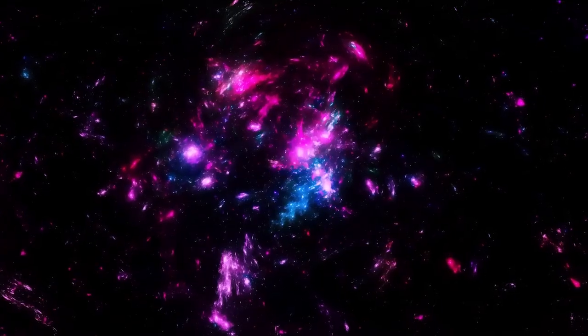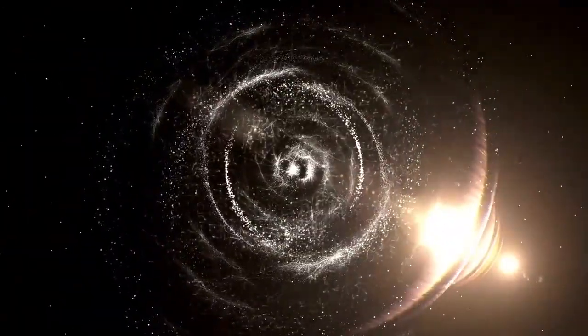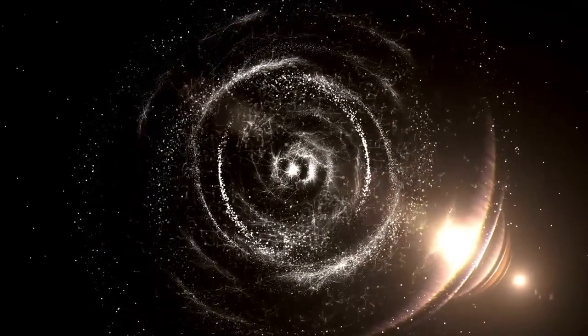The Milky Way contains approximately 300 billion stars, each likely accompanied by its own planetary system. The closest star system to us, Alpha Centauri, is 4.3 light-years away. Even traveling at the speed of light, it would take over four years to get there.